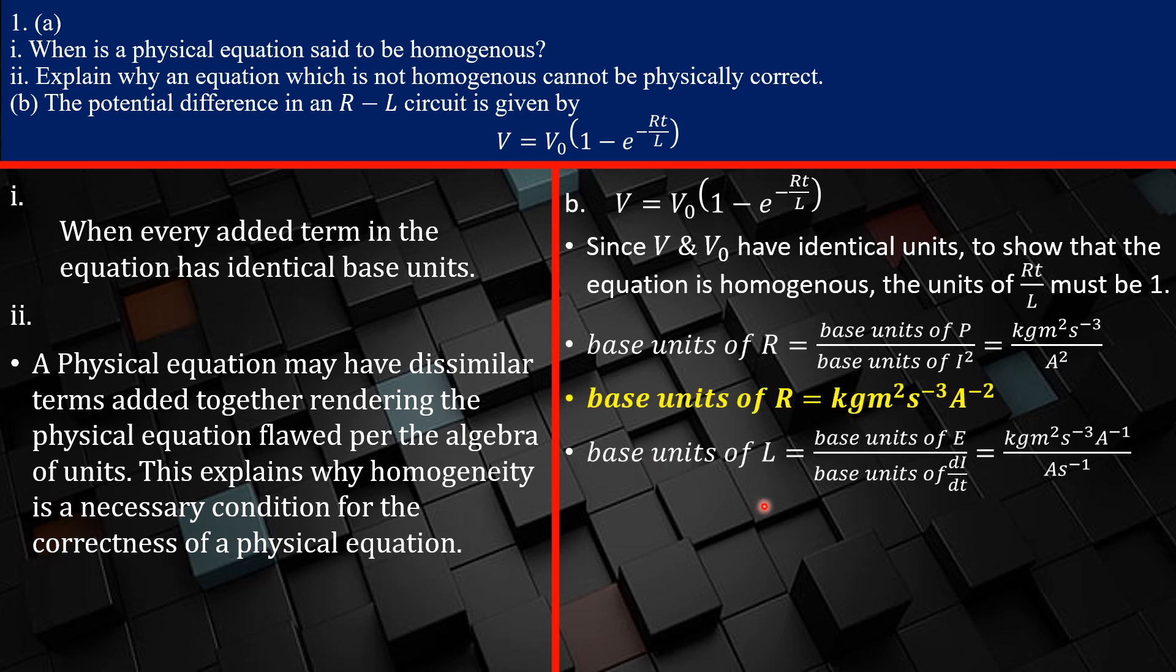Now, you go over and then you want to get the base units of inductance here. There are two ways. I just decided to use Faraday's law of electromagnetic induction to define what inductance is, because that is crucial for physics. So the base units of EMF divided by base units of the time rate of change of current, because induced EMF across a solenoid is equal to what? The inductance of that core multiplied by the time rate of change of current through that core.